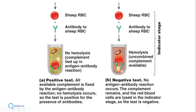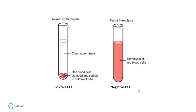In scenario two, the sheep RBCs bind the amboceptor, and the free complement is then fixed by the amboceptor. Once complement binds, it causes lysis of the cells to which the antibodies are attached, leading to hemolysis. A positive complement fixation test — where all available complement is fixed by the antigen-antibody reaction — will show no hemolysis. A negative test — no antibody, free complement — results in lysis of the red blood cells.